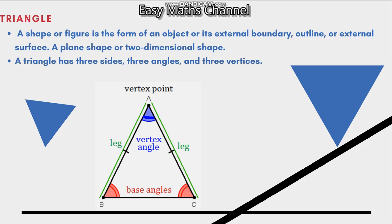Triangle is a shape. A figure is the form of an object. It is an external boundary, outline, or external surface — it is a form of a shape or figure. It is a boundary. That is the shape.